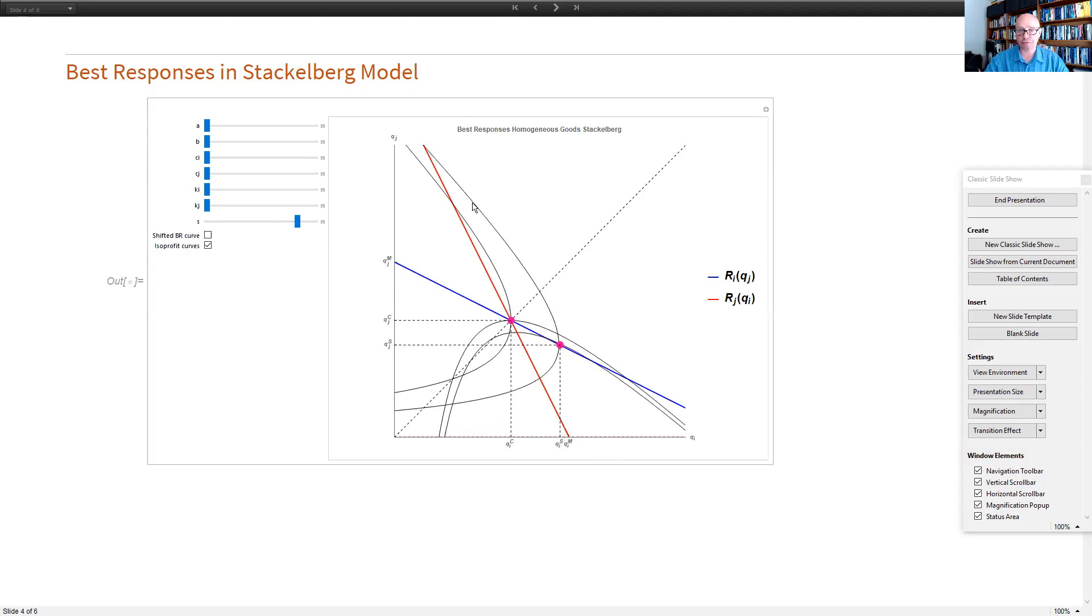And last, what I can also say is that rather than focusing on first and second movers, we can think of that as any model in which the first mover can credibly commit to push its best response function outwards. And I do that by showing basically the best response function here, which would be equivalent, would achieve the same thing as the Stackelberg first mover outcome.